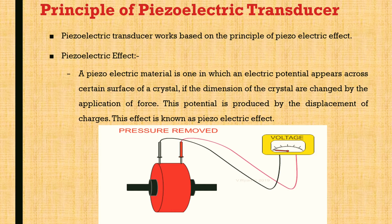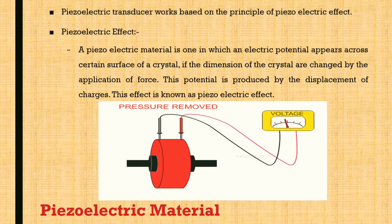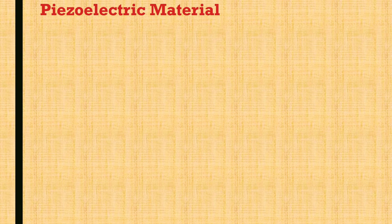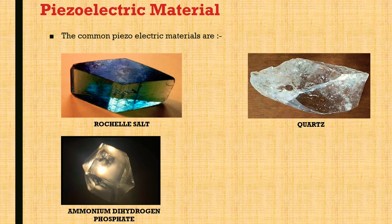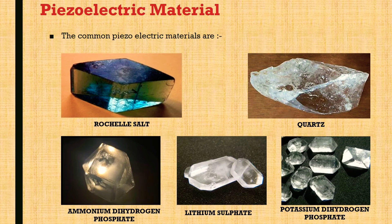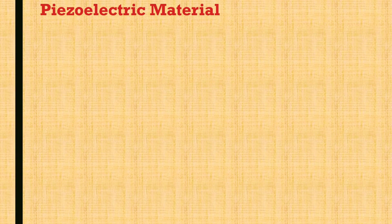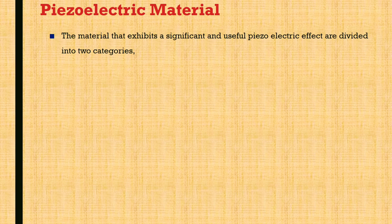When the pressure is removed, the voltage reading is zero. The common piezoelectric materials are Rochelle salt, quartz, ammonium dihydrogen phosphate, lithium sulfate, and potassium dihydrogen phosphate. The materials that exhibit a significant and useful piezoelectric effect are divided into two categories: the first is the natural group and the second is the synthetic group.